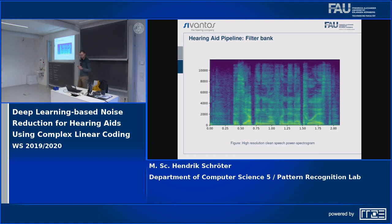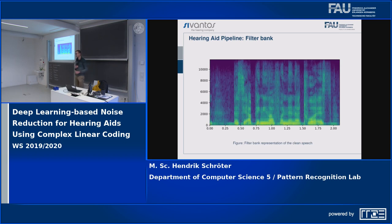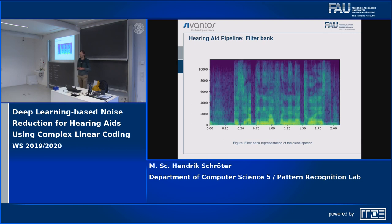What is the actual input of our noise reduction algorithm? Here we can see a high-resolution spectrum of a speech signal, and we can see the typical speech harmonics from the voiced parts of the speech. Unfortunately, our input looks like this — where we don't see the speech harmonics because our frequency resolution is very limited and multiple speech harmonics can fall within one frequency band.